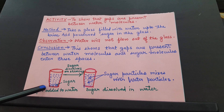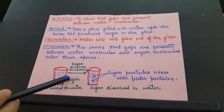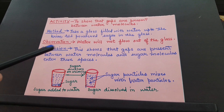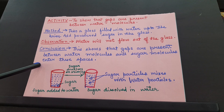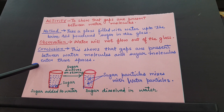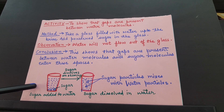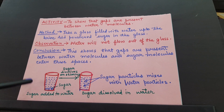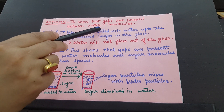What does it mean? Sugar dissolves on stirring — stirring means mixing — and sugar particles mix with the water particles. This shows that gaps are present between the water molecules and sugar molecules have entered these spaces. From this experiment, we conclude that there are gaps present between the water molecules.